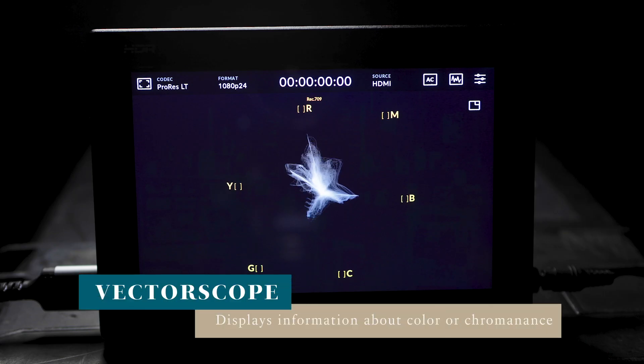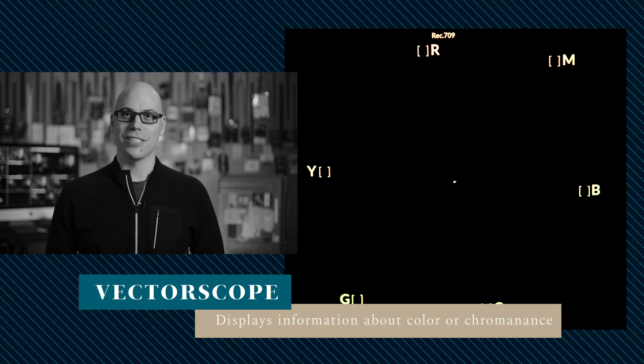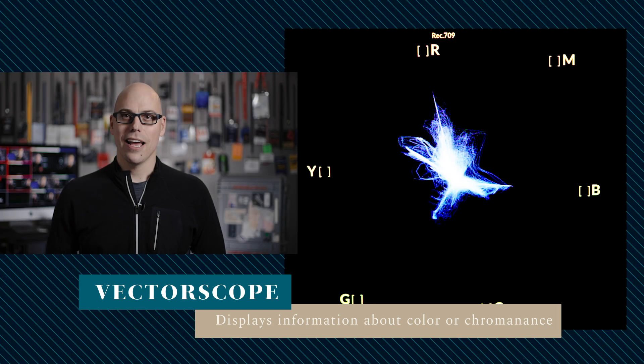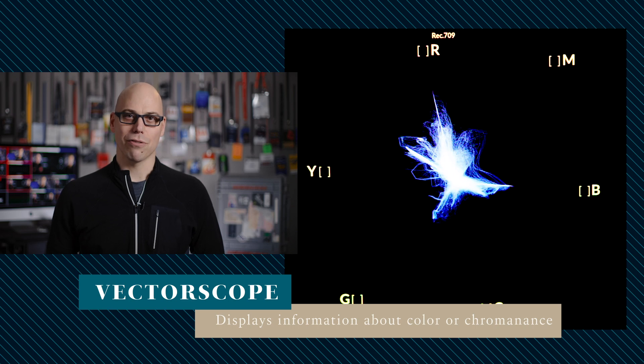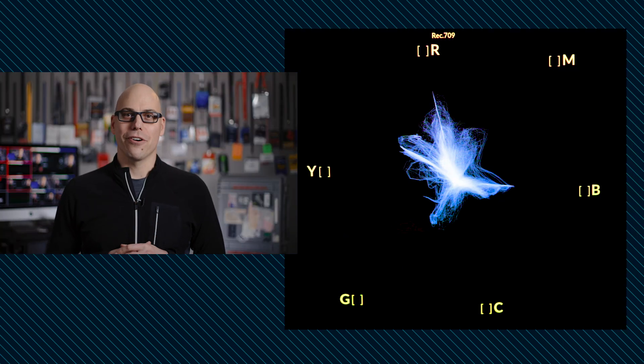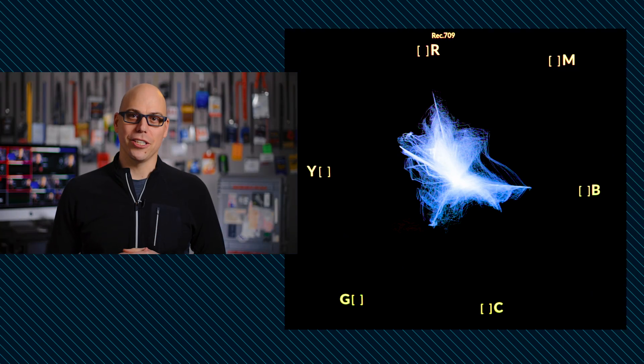A vectorscope measures the distribution of color in an image. Pure white and pure black are represented as a dot in the center, and hues radiate out at different angles from there, with red, magenta, blue, cyan, green, and yellow targets around the edges. The farther the trace is from the center, the more saturated the colors are in the image. The nearer they are to the center, the less saturated the color.